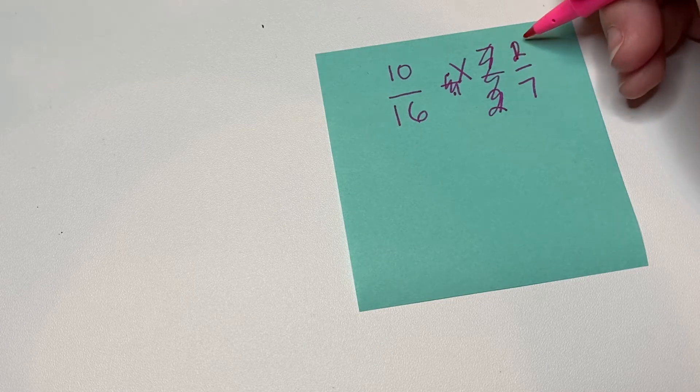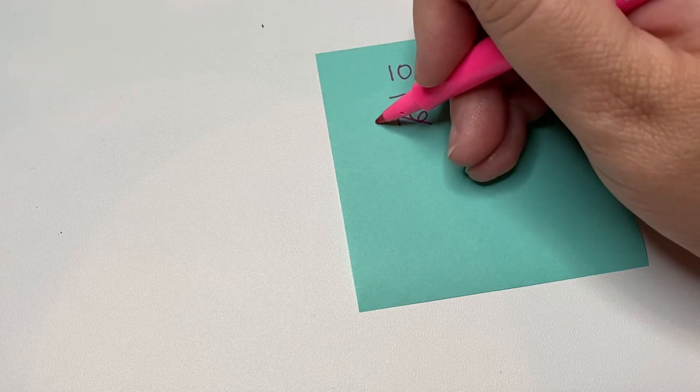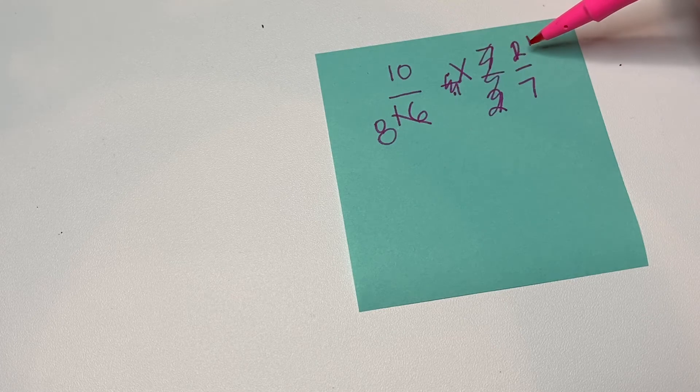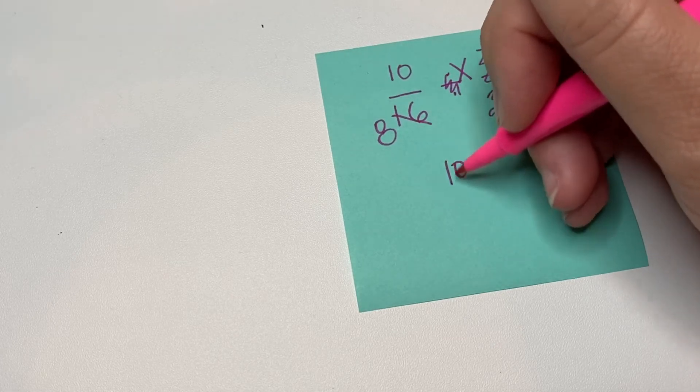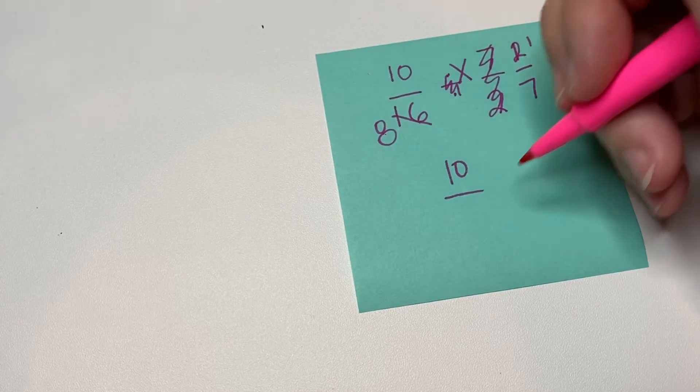So two goes into two once, two goes into sixteen eight times. And then we're going to have ten times one is ten and eight times seven is fifty-six.